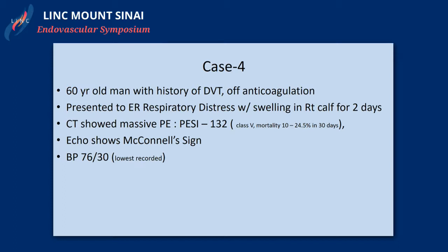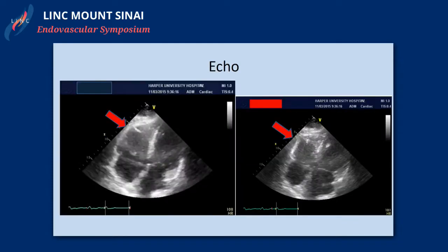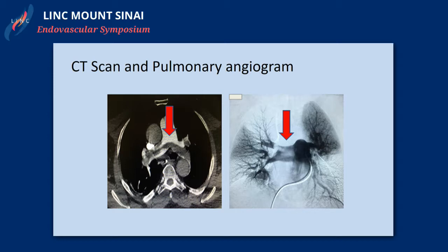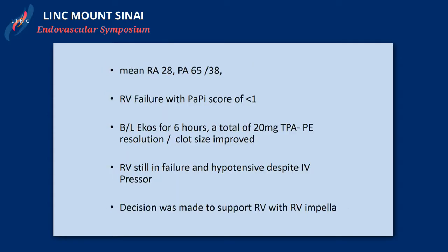The fourth case is a 60-year-old patient with DVT off anticoagulation, presenting with respiratory distress and swelling in the ER. The CT scan showed a massive PE, the PESI score was very high, and echo signs showed McConnell's sign with a blown-out RV and extreme hypotension. The RV was dilated, with a large saddle embolism extending to both the right and left lung, and the angiogram showed bifurcation of the saddle embolism to the right upper and lower. Bilateral EKOS was placed for six hours, totaling 20 milligrams of TPA, and the patient was brought back showing clot resolution and decreased clot burden.